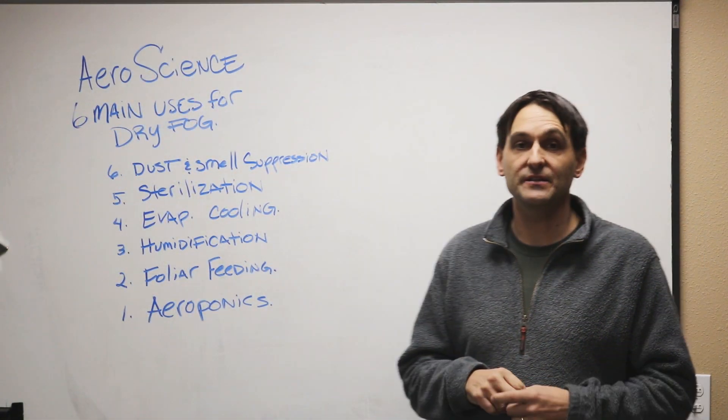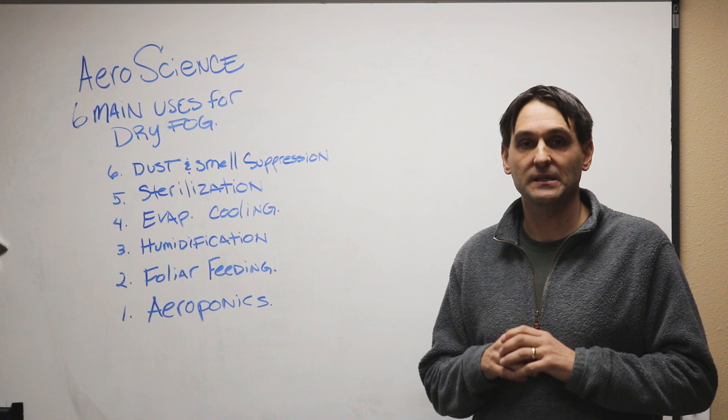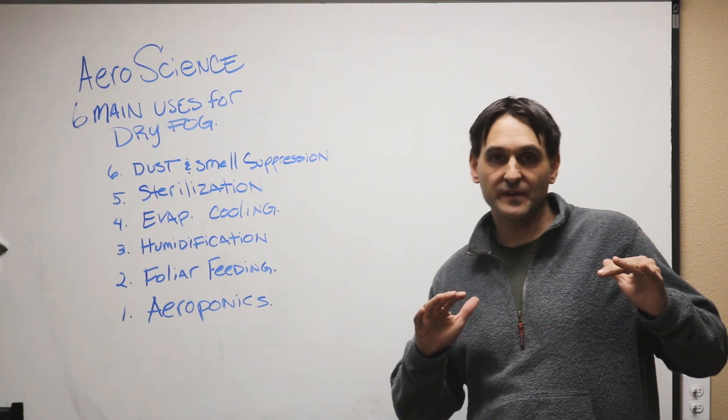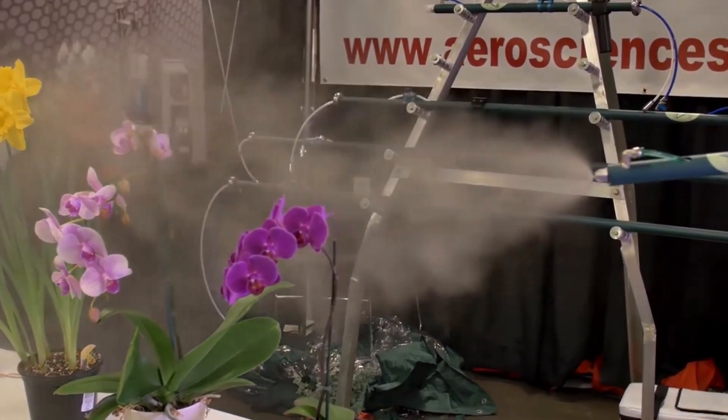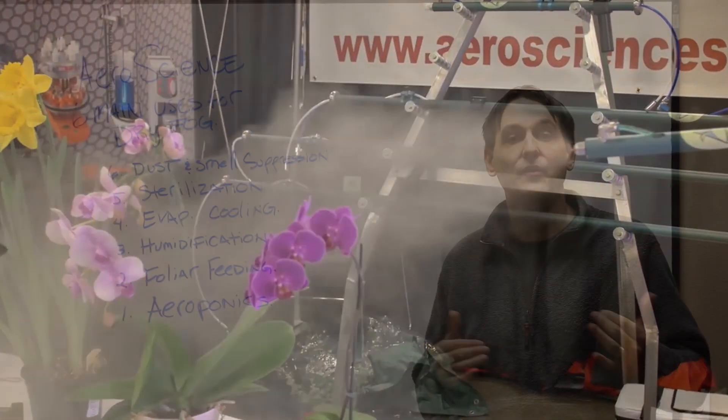The number two use I see for dry fog is foliar feeding. Dry fog is extremely efficient at coating the leaf surface. So dry fog nozzles can be used in a greenhouse to automate the foliar spray process.